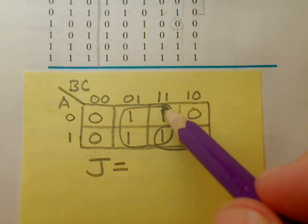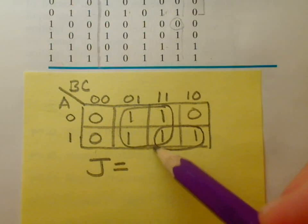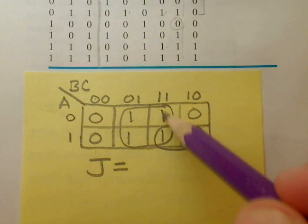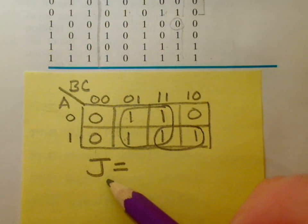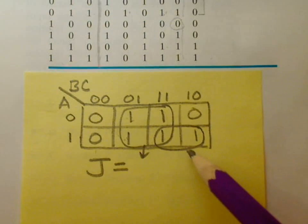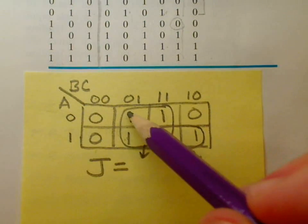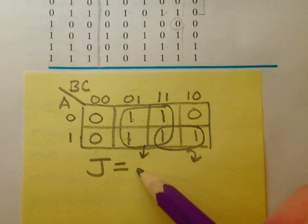So what you want to do in this two by two group right here is notice that A changes as you go throughout these four cells. So it's not a factor in the first term. So A is not a factor, not a term, not a literal in this particular term.